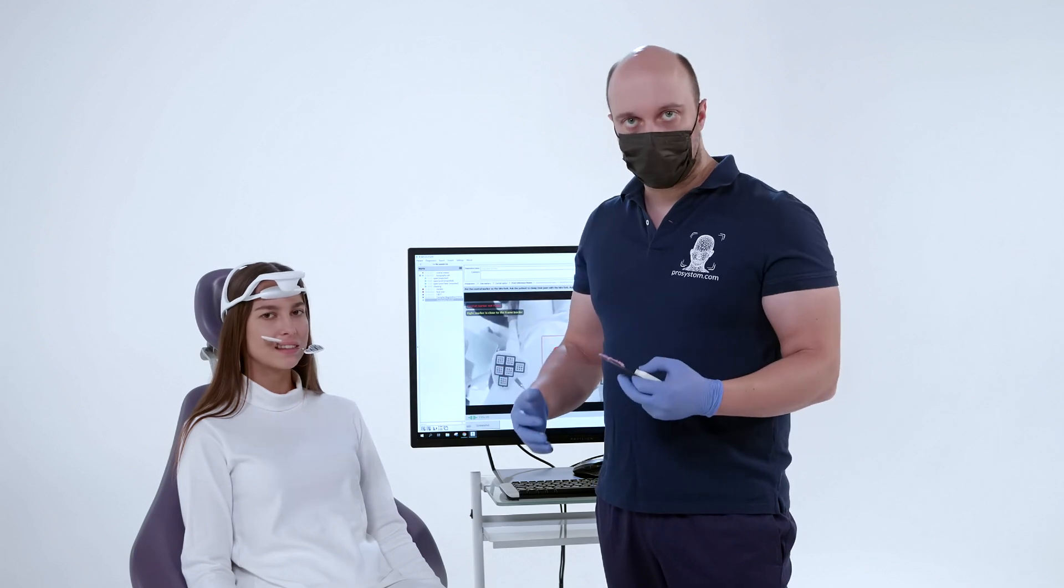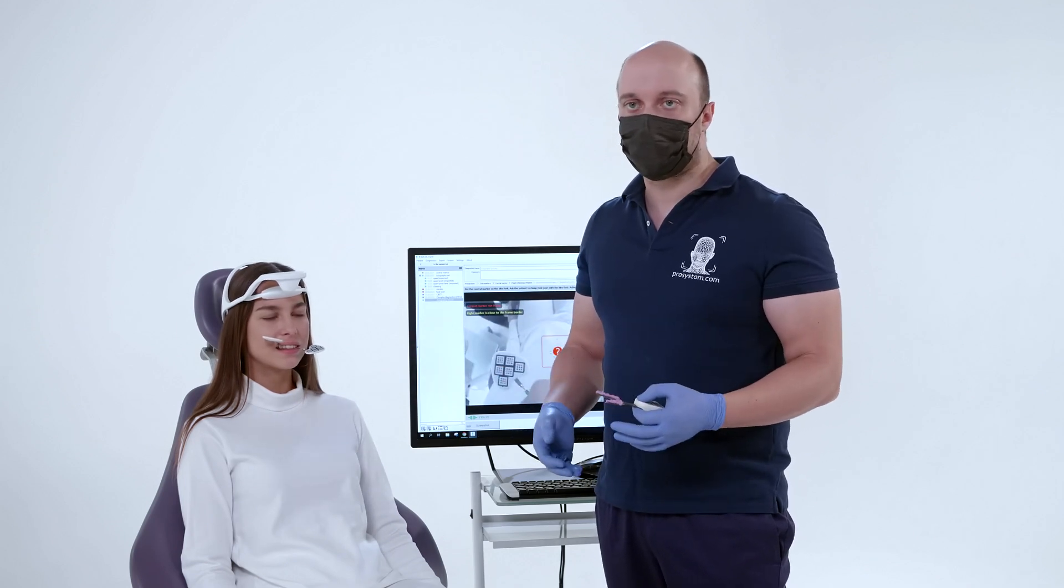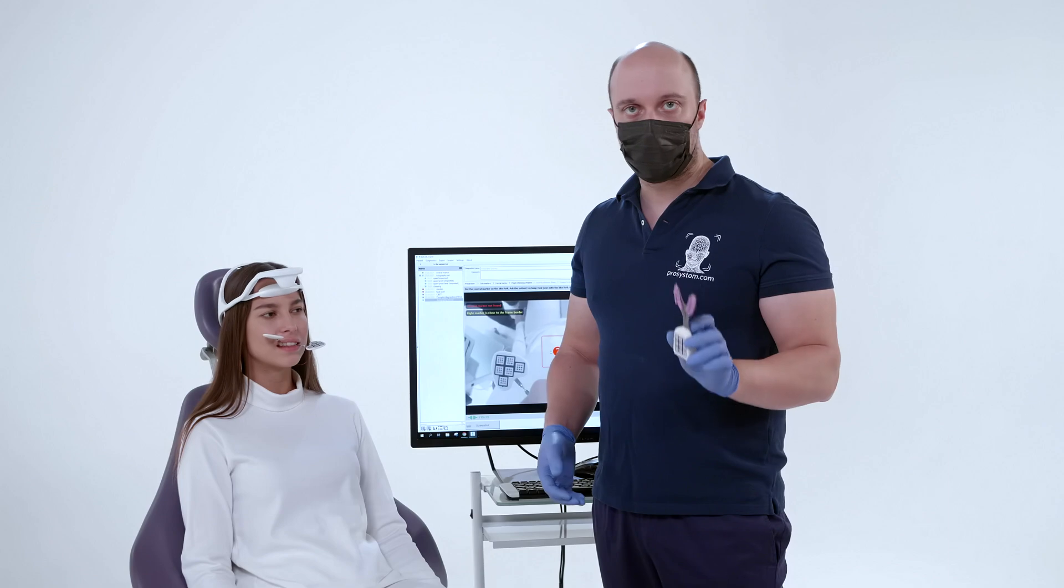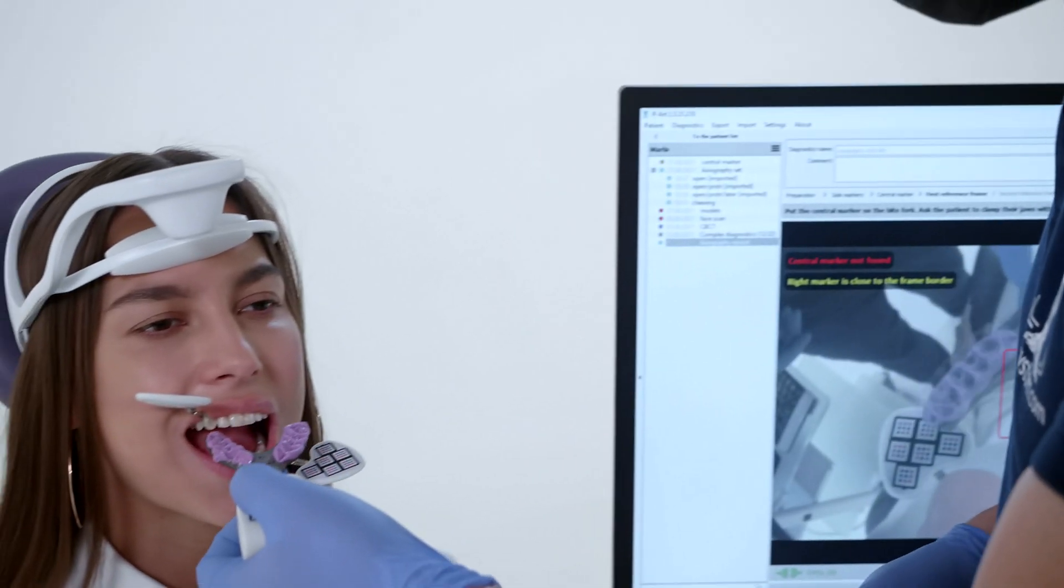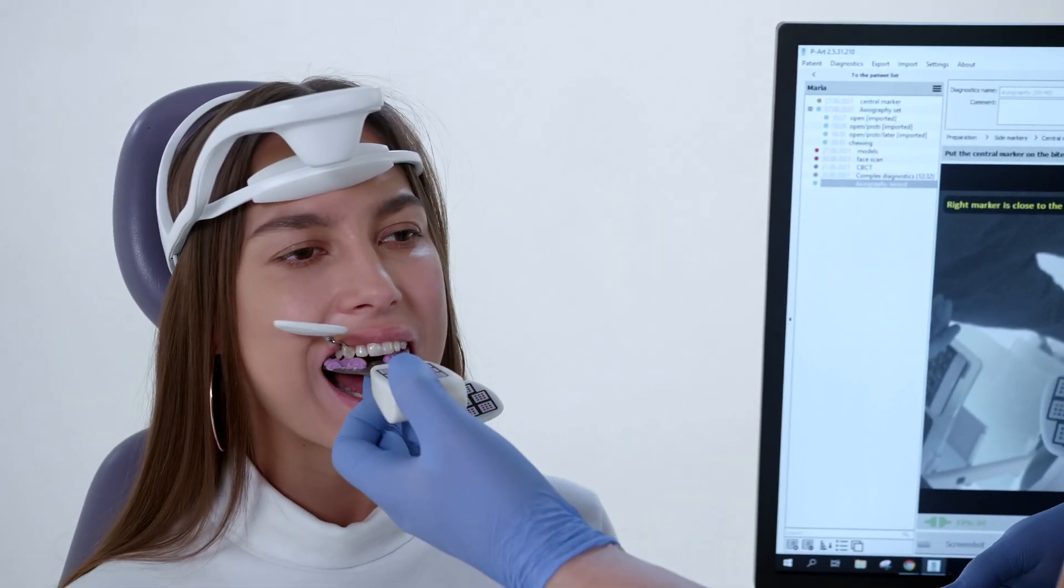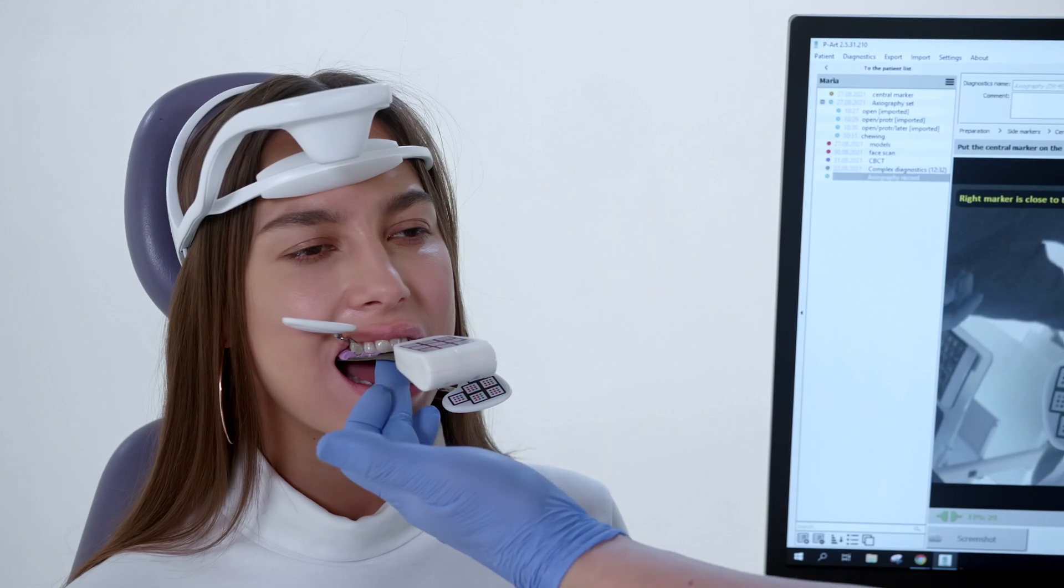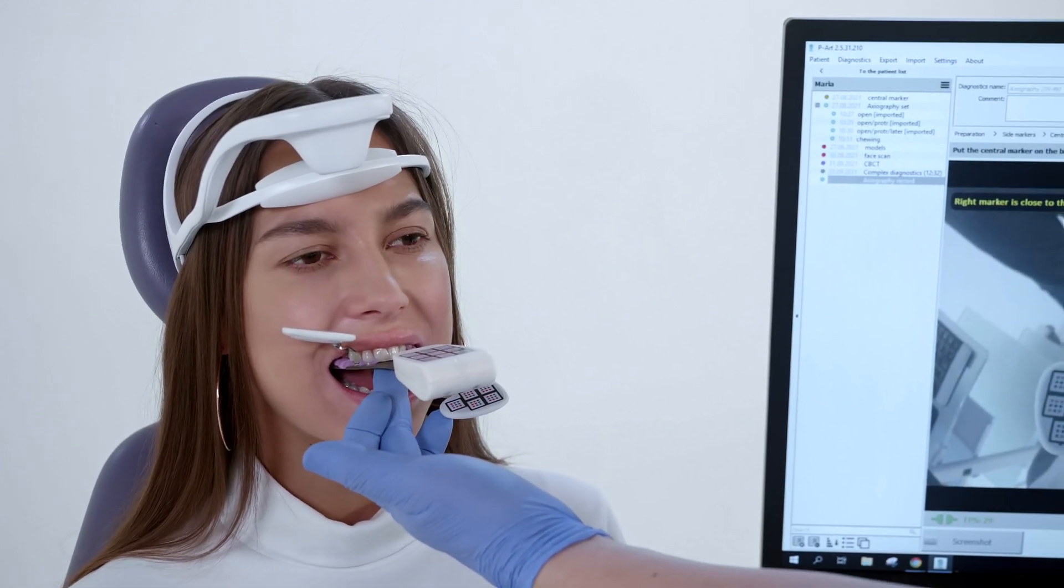First stage in Axiography. Be sure to have side markers and a digital arc. Record their location. After this step, it is impossible to change the position of the upper right marker.